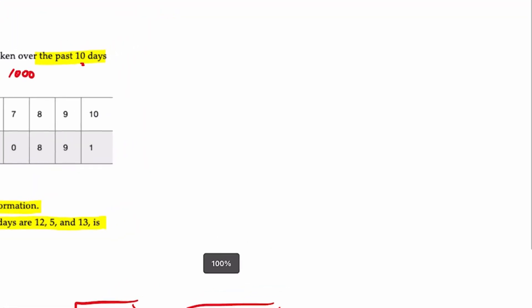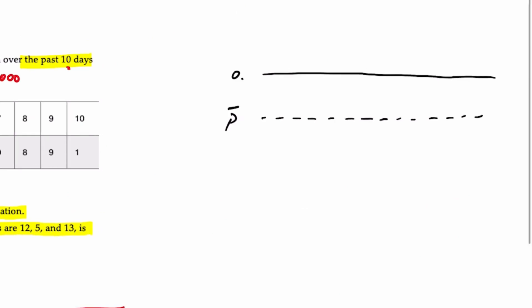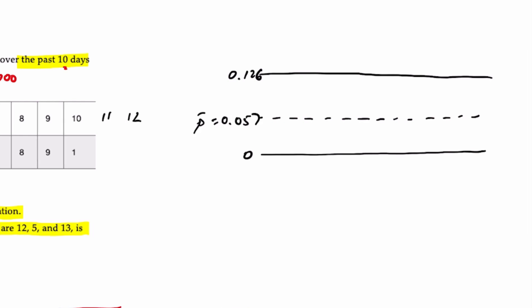What we can do now is create our chart. We know that the center line is p-bar. Our upper control limit might look something like that at 0.126. And then the lower control limit is going to be set to 0.